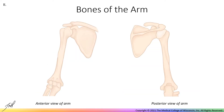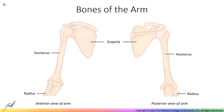Let's begin by discussing bony landmarks that provide attachment sites for muscles in the arm. These include components of the scapula, humerus, radius, and ulna.